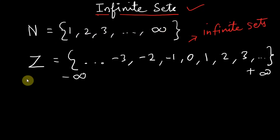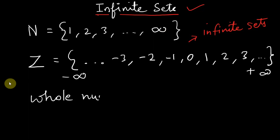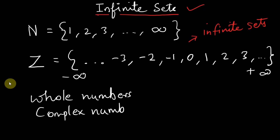There are many other infinite sets, such as the set of whole numbers, the set of complex numbers, and the set of prime numbers. All of these have so many elements that we cannot count them, which is why they are called infinite sets.